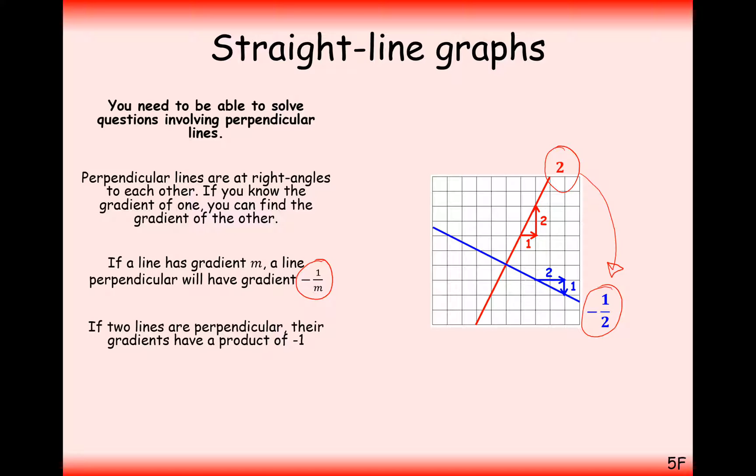Some people refer to it as the negative reciprocal, reciprocal meaning one over, and it's negative because one graph has to be of a positive gradient, and one graph will have to be of a negative gradient if they are to meet at a right angle.